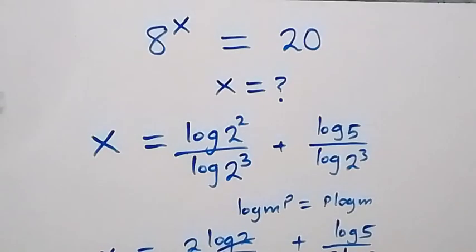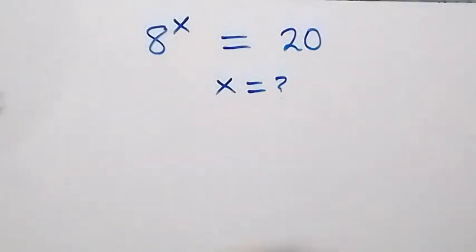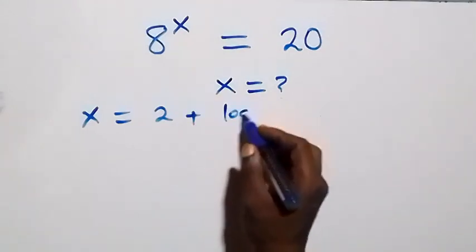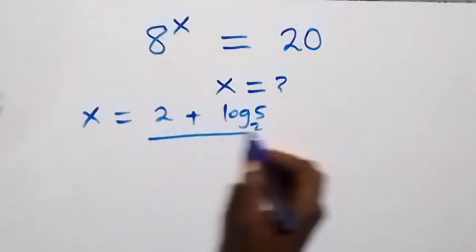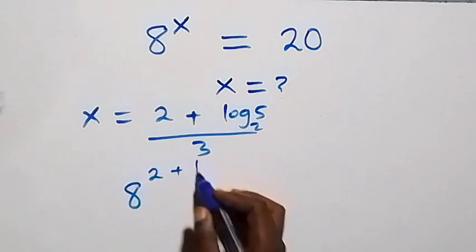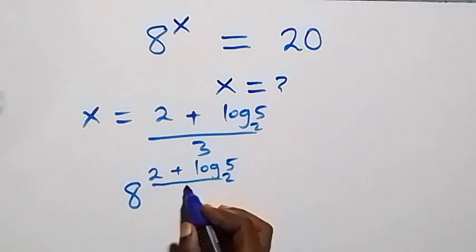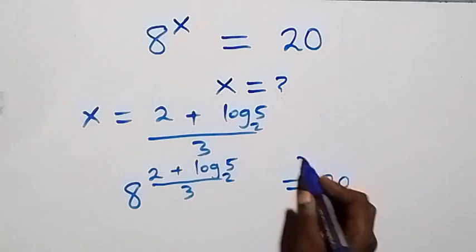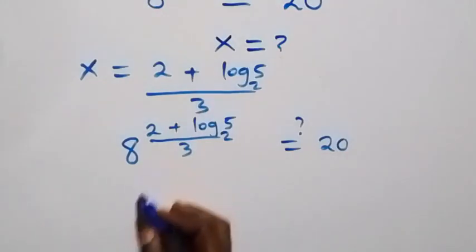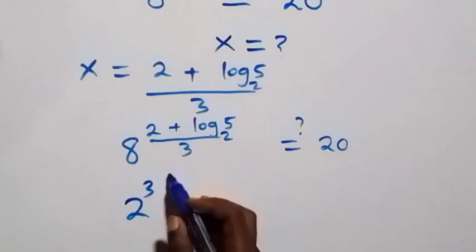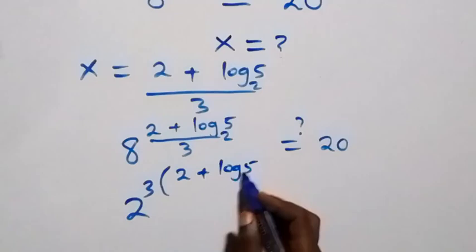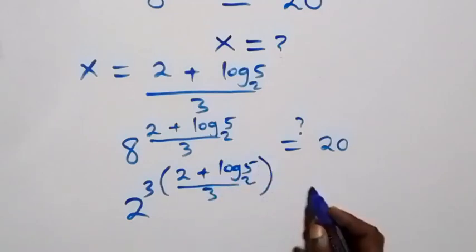We substitute the value x equals to the quantity 2 plus log base 2 of 5, over 3. What we have becomes 8 raised to power (2 plus log base 2 of 5) over 3. We can write 8 as 2 raised to power 3, then multiply by (2 plus log base 2 of 5) over 3, and check if this equals 20.